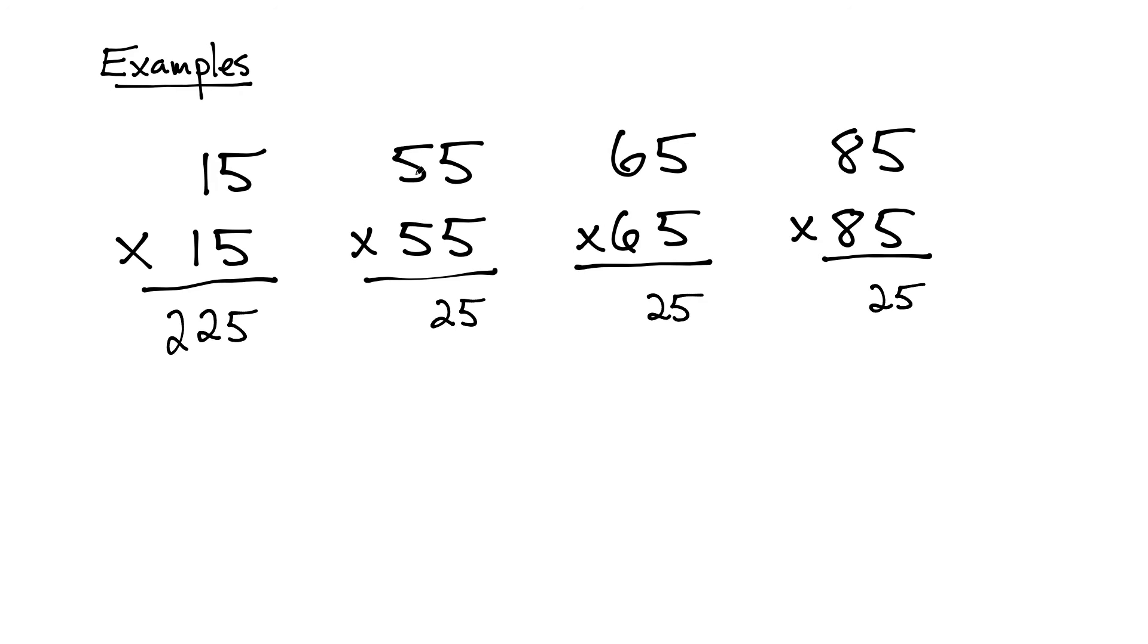How about this one? Instead of multiplying 5 times 5, I have to add 1 to the top number and then multiply them. So I get 5 times 6 is 30. 3025.